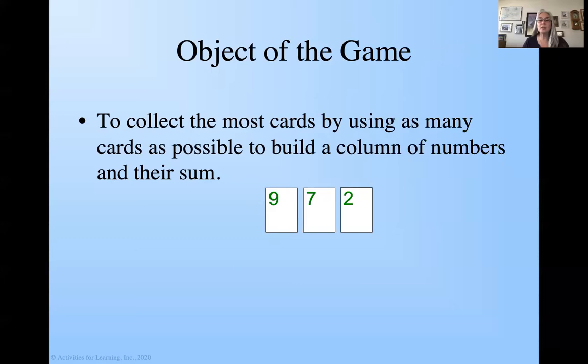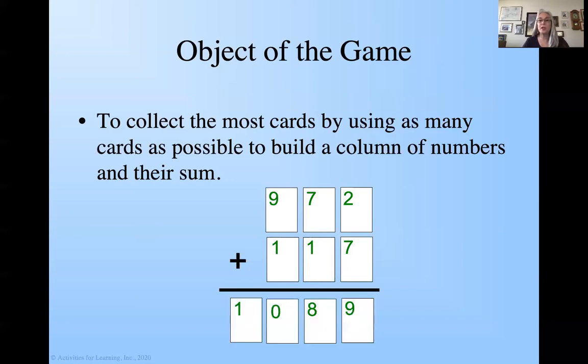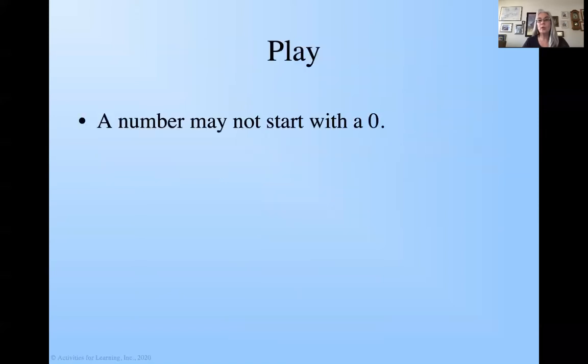So let me show you what I mean here. So I have 972. These three cards are making 972, and I'm going to add 117. So I'm using these three cards, one, one, and seven to be 117. And then I add them up. And of course, I have to have the right cards to come up with 1089. Now, when we're playing the game, we're not going to have the plus and the line. So it's going to look like this when we play it. Now, when we do play, a number may not start with a zero and no blank spaces are allowed. So let's go play and see what this looks like.